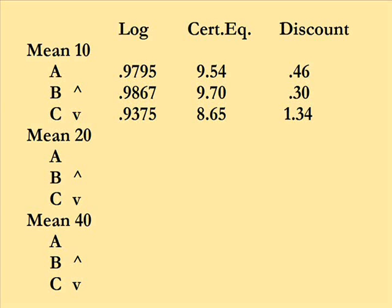Now remember, A was symmetrical, had 5 cases of up 3 and 5 cases of down 3. B was up 9 one time, and then 9 times down 1. And C was the mirror image of down 9 once of 10 cases, and then up 1 nine times. And here we have computed the log of the average of the expected utilities, we have calculated back the certainty equivalent, and likewise have figured the discount.